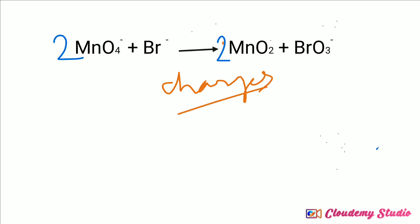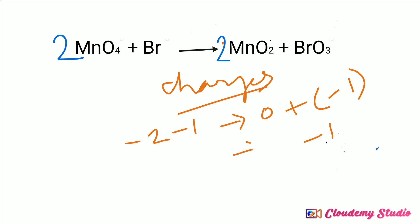On the left-hand side, permanganate ion appears 2 times with charge minus one each, giving minus two total; bromide ion contributes minus one. So the total left-hand side charge is minus three. On the right-hand side, manganese dioxide is neutral (charge zero), and bromate ion has charge minus one. So the right-hand side charge is minus one. The charges are not equal: left is −3, right is −1.